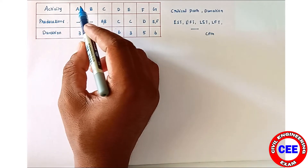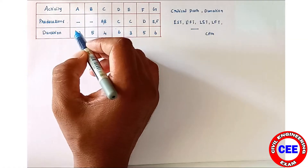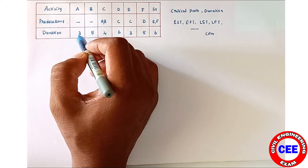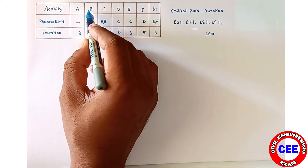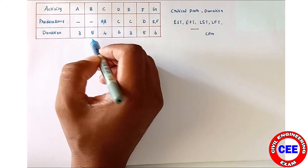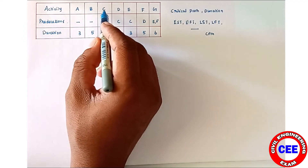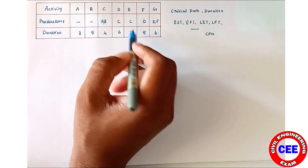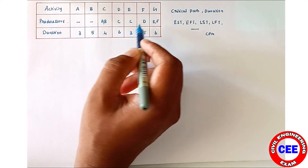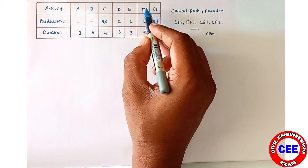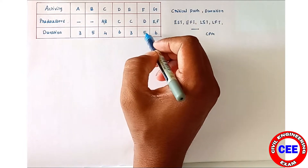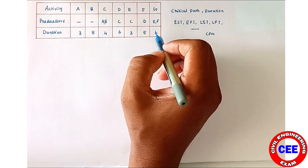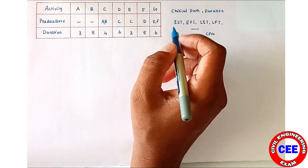The corresponding activity durations are also given. For activity A, the duration is 3; for B, it is 5; C is 4; D is 6; E is 3; F is 5; and G, the duration is 6.